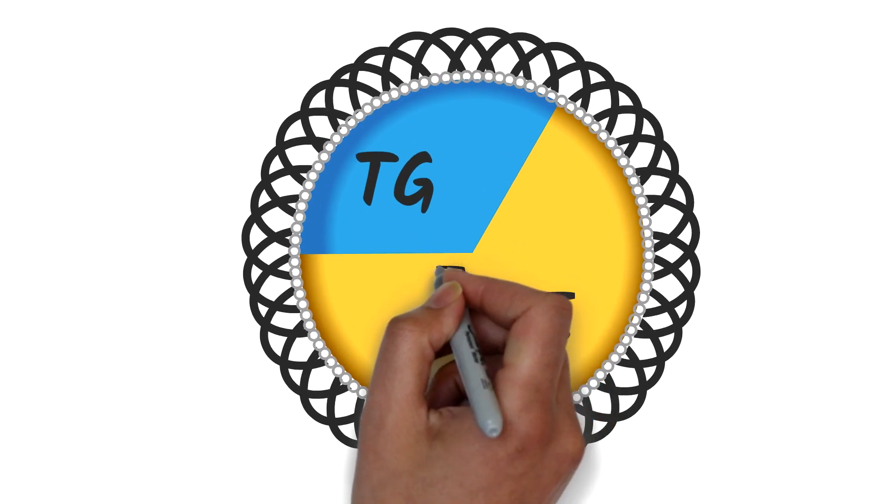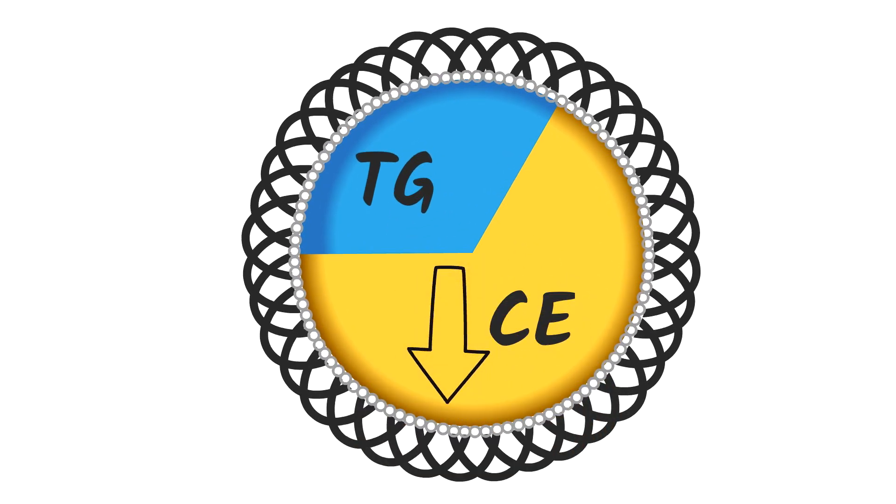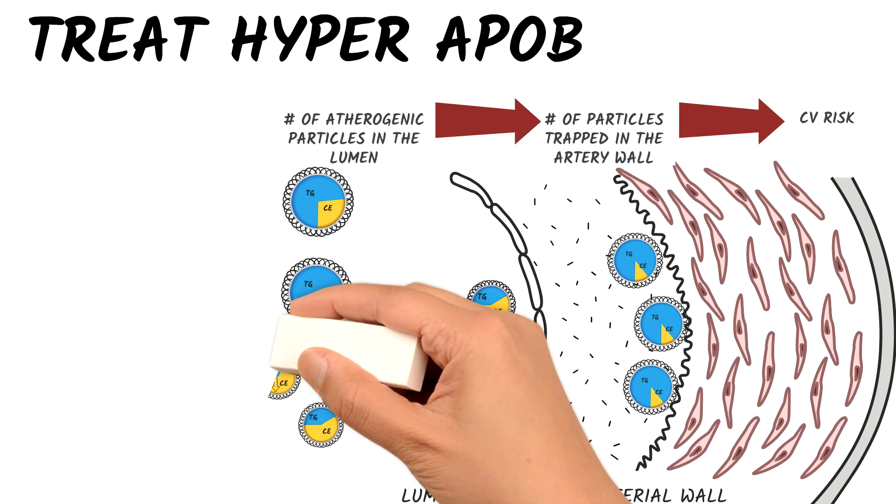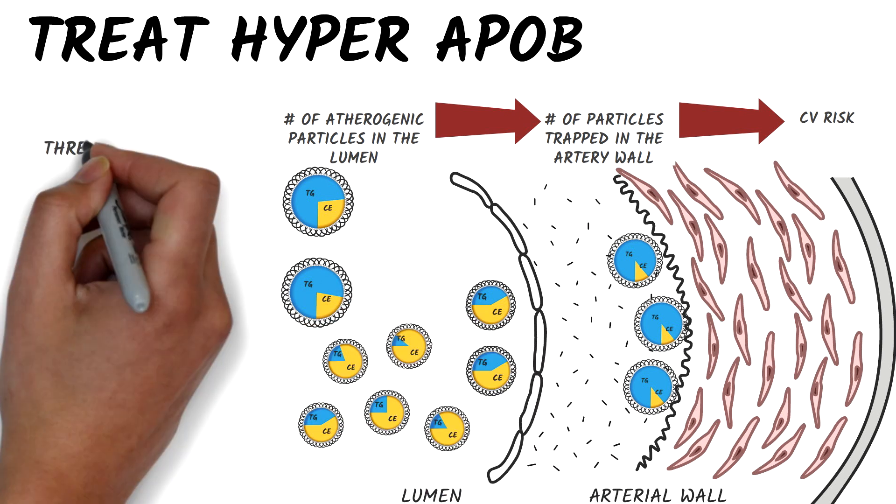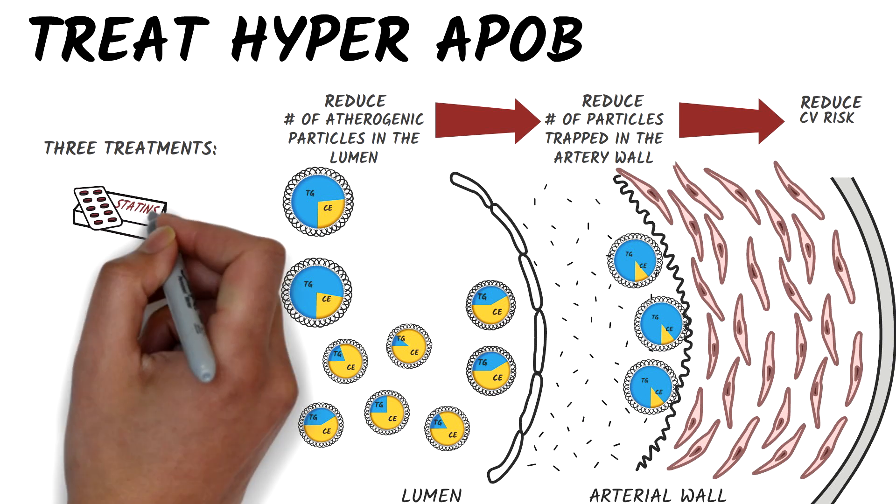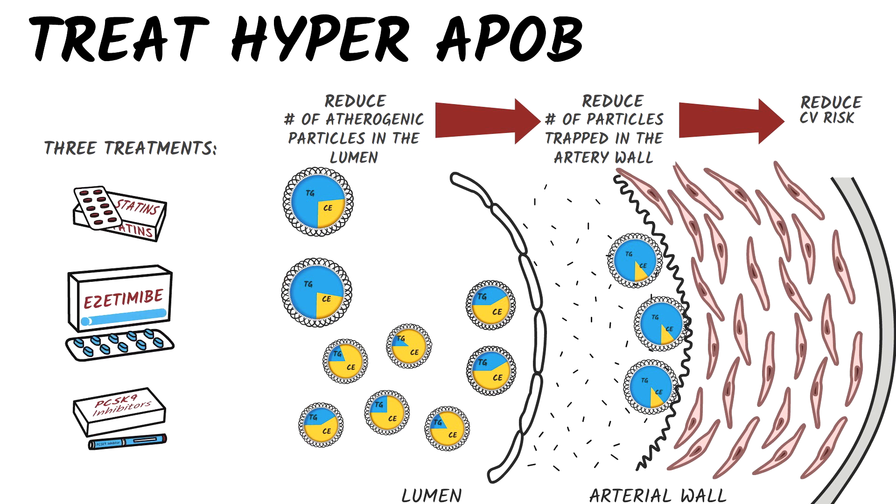Now, how do we treat hyper-ApoB? The same way we treat LDL-C, because it turns out that our treatments lower LDL-C by increasing the rate at which ApoB particles are removed from plasma. There are three treatments that lower cholesterol and ApoB by reducing the number of ApoB particles within the lumen, which reduces cardiovascular risk: statins, ezetimibe, and PCSK9 inhibitors.